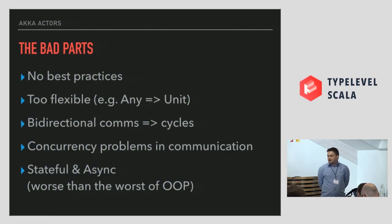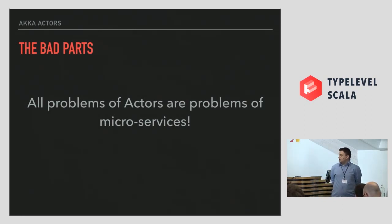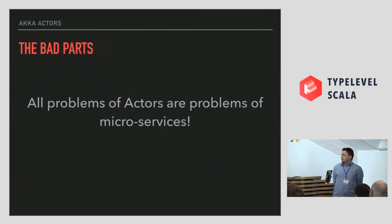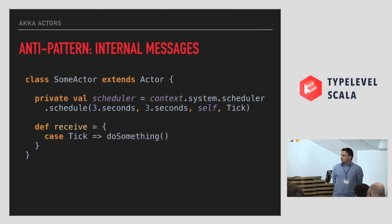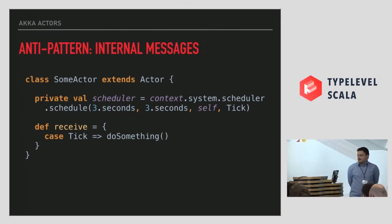Because they are stateful and asynchronous, the problems you can have with actors are actually worse than the worst you've ever seen with OOP and stateful things — because actors can evolve by themselves with no input from the outside world. And before you say that you are not using Akka actors: all problems of actors are problems of microservices and distributed systems. This is an anti-pattern — usually this is something easy to do. You set a tick that gets triggered every three seconds and you evolve the actor in some way, do a database request, and do stuff.